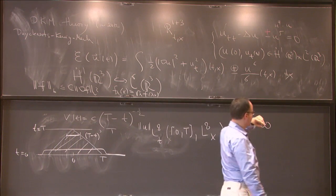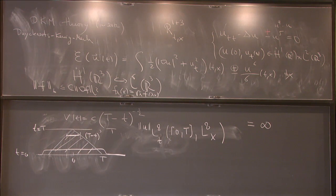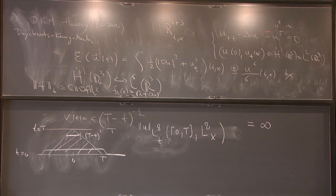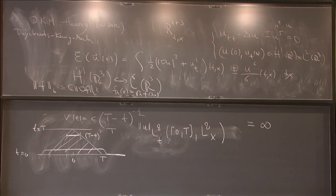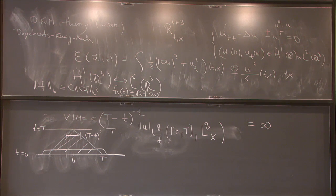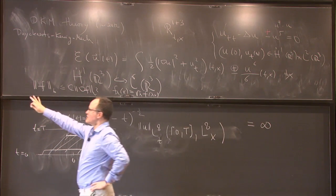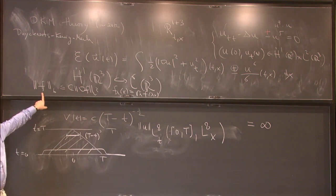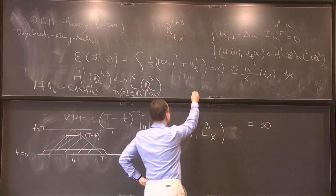So for -u^5, we see that you can have finite time blow-up for large data. On the other hand, by Strichartz theory, you have global existence and scattering for small data in Ḣ¹ × L². So you have a dichotomy: small data — everything's fine, you scatter to a free wave, all the energy radiates off to infinity. But as shown by this example, you can have finite time blow-up for large data. Moreover, there is an elliptic object in the background.